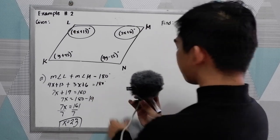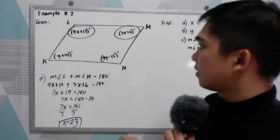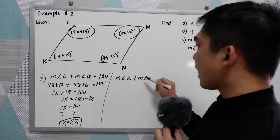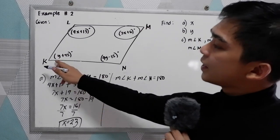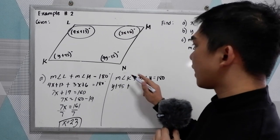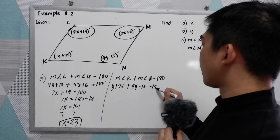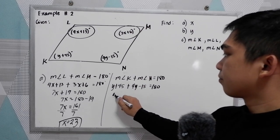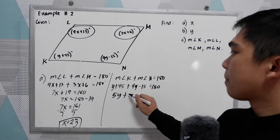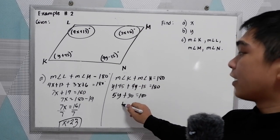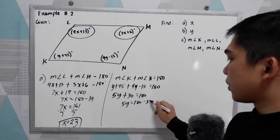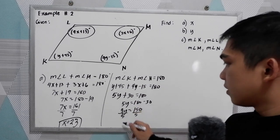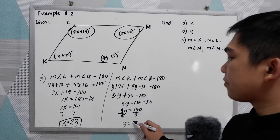Part B: solve for Y. Applying property number 3, consecutive angles K and N sum to 180 degrees: Y plus 45 plus 4Y minus 15 equals 180. Combining like terms: Y plus 4Y is 5Y, and 45 minus 15 is positive 30, so 5Y plus 30 equals 180. Therefore 5Y equals 180 minus 30, which is 150. Dividing by 5, Y equals 150 divided by 5, that is 30.